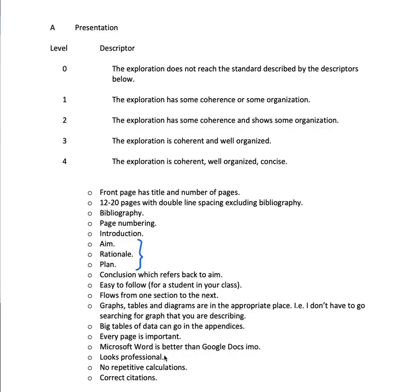No repetitive calculations. If you're finding the correlation coefficient of two variables and there's no correlation, then another two variables, and you've got like 20 pages of just finding correlation coefficients — that's repetitive and boring. If your IA does require 20 different correlation coefficients, put 19 of them in the appendices and just quote the results, because no one wants to read all of that. And finally, correct citations — make sure your citations are correct.